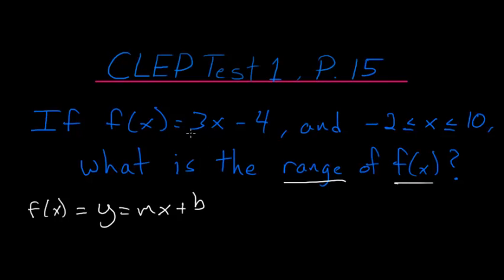m is the slope, or the coefficient here, so 3 is our slope, and b is our y-intercept, so -4 is where the function intersects the y-axis.